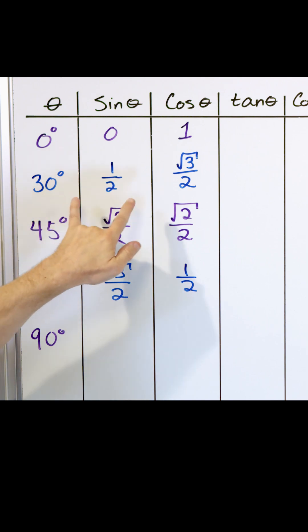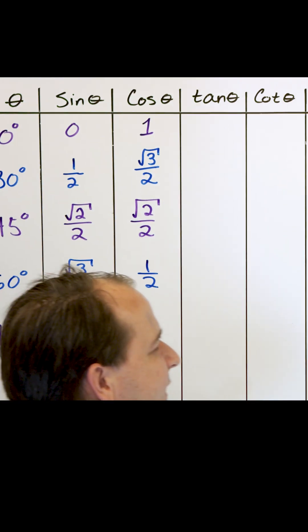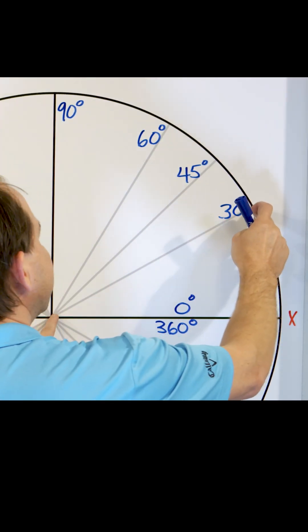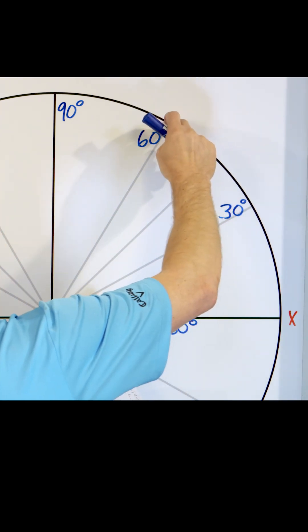For the 30 degree position, the sine and cosine is completely flipped. Why is it like that? It's because there's symmetry with the 30 degree position and the 60 degree position.